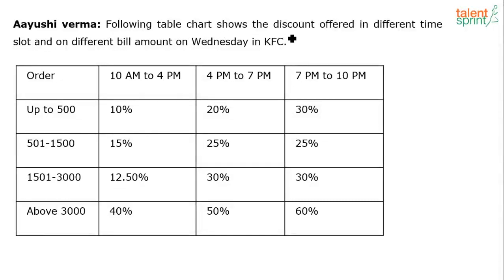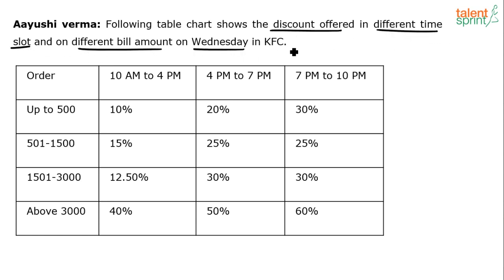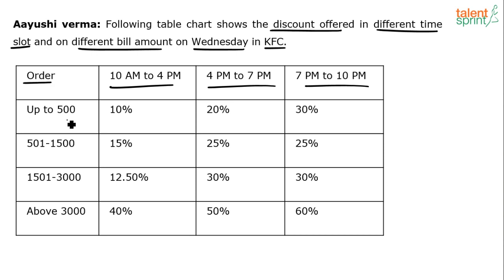The following table chart shows the discount offered in different time slots on different bill amounts on Wednesday in KFC. There are different time slots: 10 AM to 4 PM is the first slot, 4 PM to 7 PM is the second slot, and 7 PM to 10 PM is the third slot.